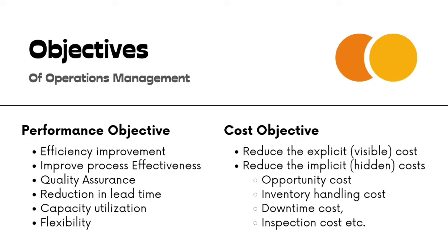Under cost objectives, we mainly have two goals. One is to reduce explicit costs — the visible, direct costs like the cost of raw materials, skilled labor, and packaging. The other is to reduce hidden or implicit costs, such as stationery, electricity, opportunity cost, inventory handling cost, downtime cost, and inspection cost. So from the cost perspective, the objective is the reduction of both explicit and implicit costs. These are the objectives of operations management.